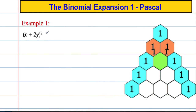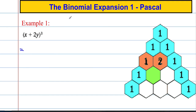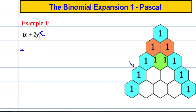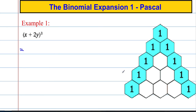Let's test it out with an example: x squared plus two y to the power of three. This is the power of three, which means we're going to have cubic terms — cubes, squares, singles, and then powers of zero. So we're looking at the fourth row of Pascal's triangle. If it's a power of three, you go to the fourth row; if it's a power of four, you go to the fifth row, and so on. So the coefficients are going to be one, three, three, one.